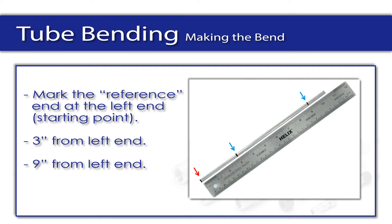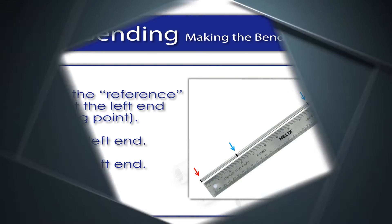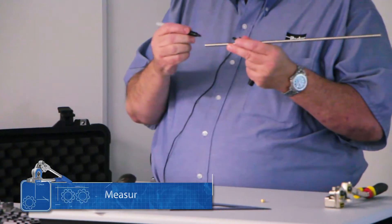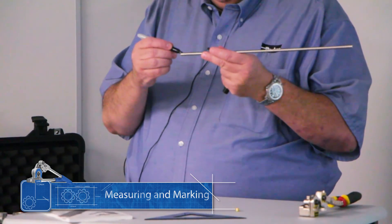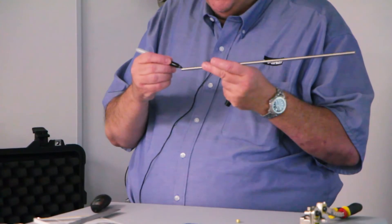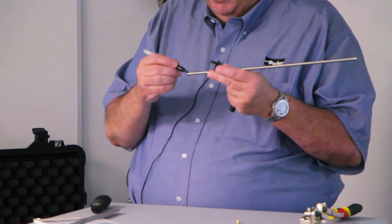We want to do is we need to have a reference end. I need to be able to tell this end from that end. So what I like to do, you might find a difference, I like to put a solid mark all the way around one end. And that's my measured end. That is kind of the origin of where I'm starting from. And that's going to be important to know.